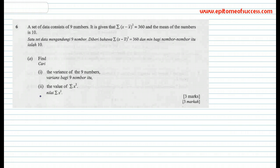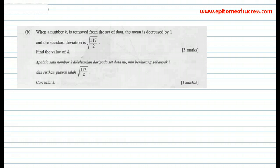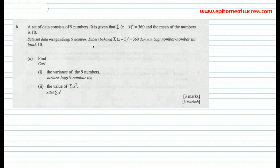I've broken them down into two parts. This is 6A, 3 marks, and on the second page is B, another 3 marks. Let's have a look how the questions are always asked. A set of data consists of 9 numbers. It is given that the sum of (X minus mean) squared equals 360, and the mean of the numbers is 10. Find the variance of the 9 numbers.